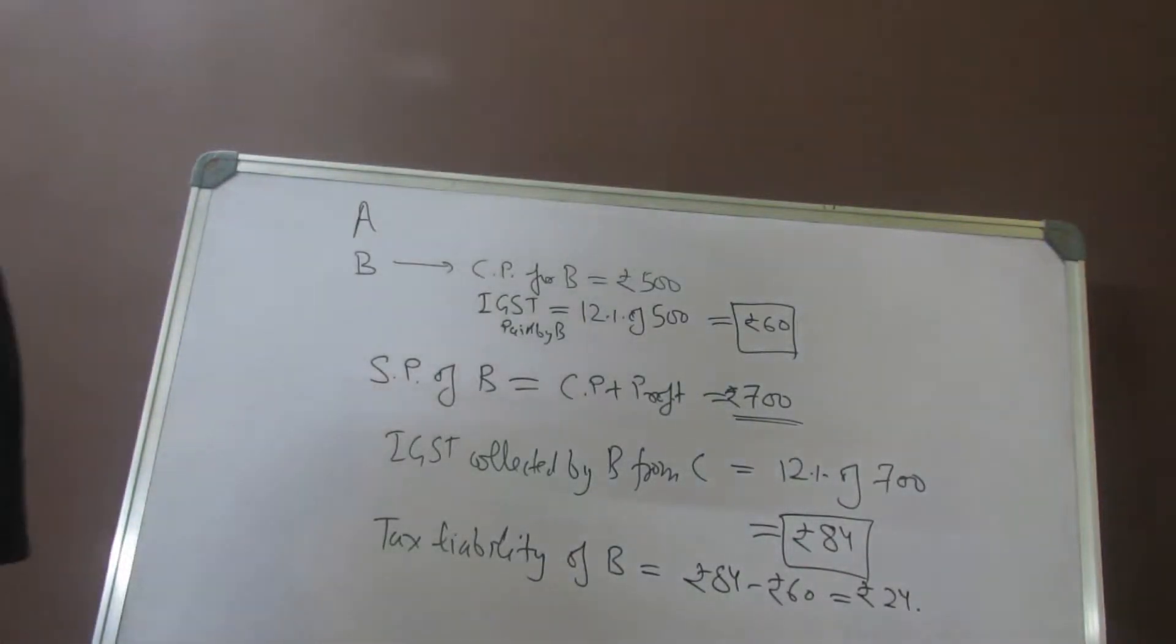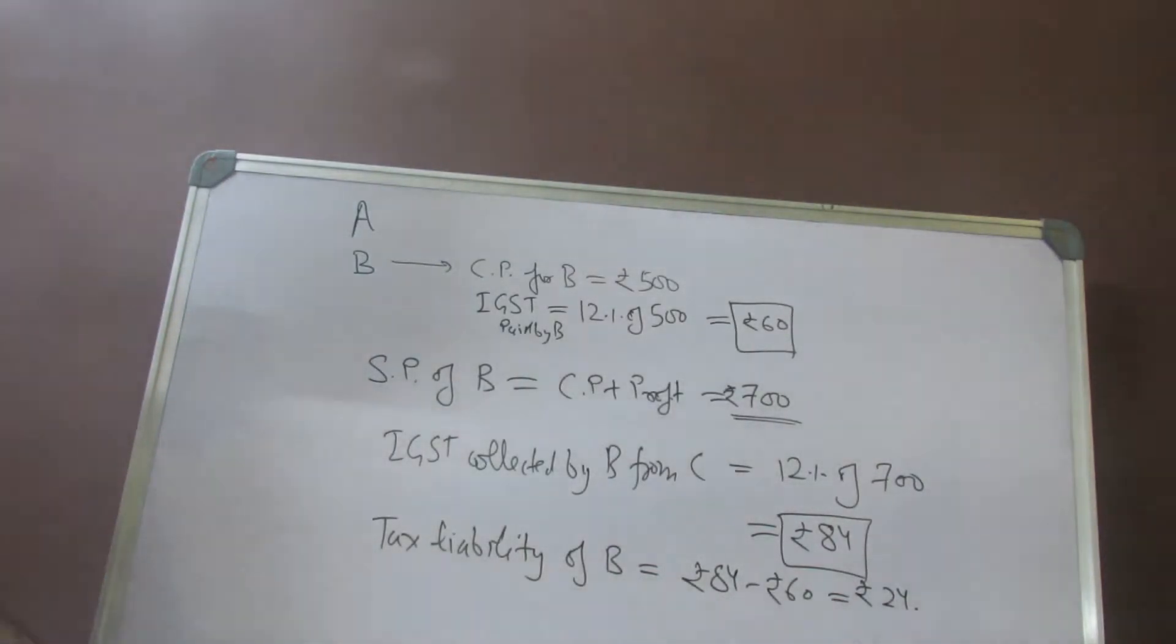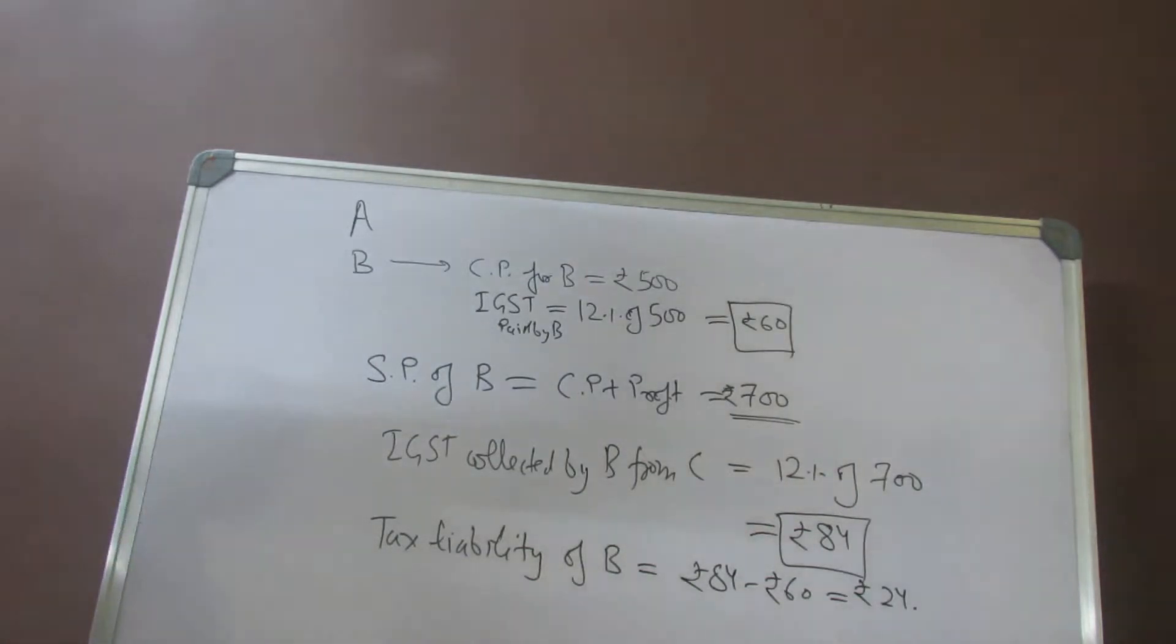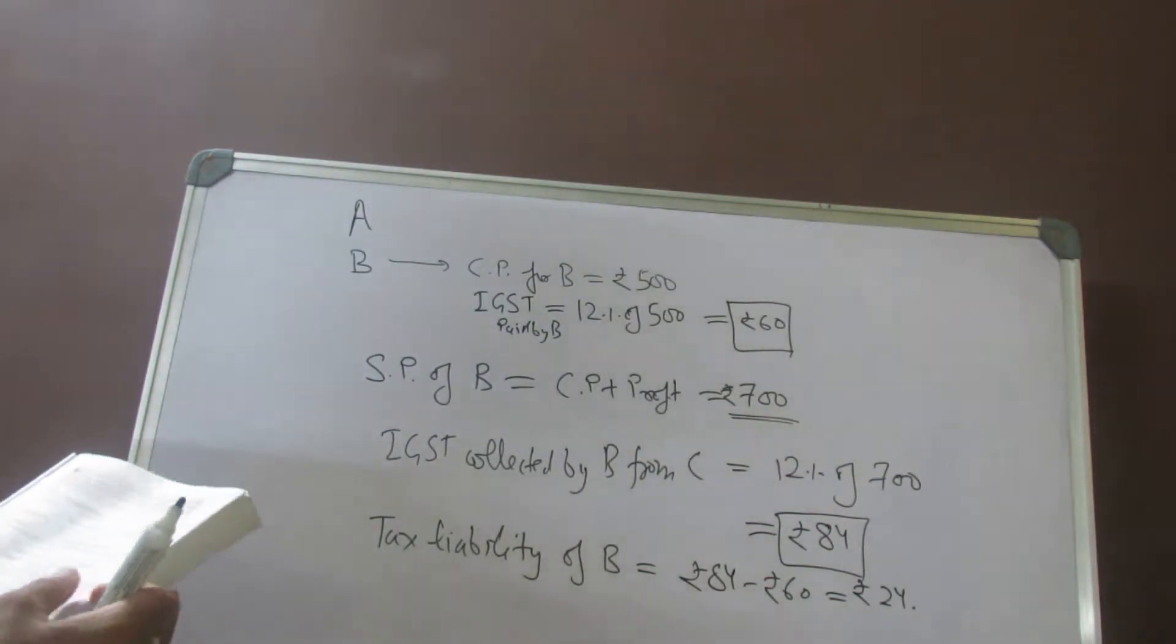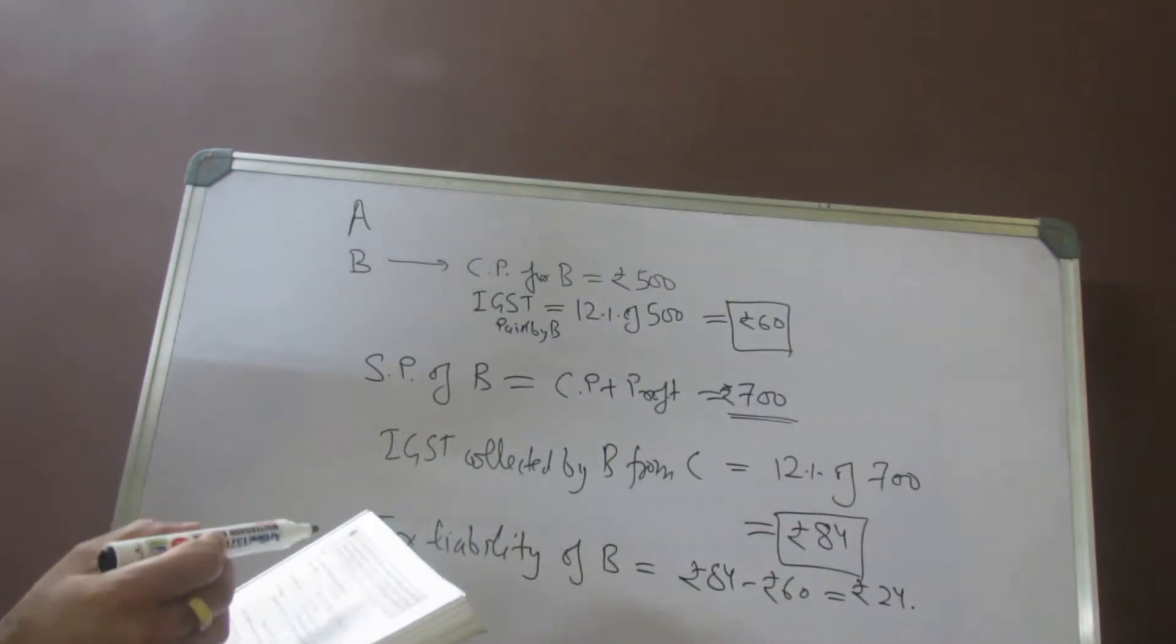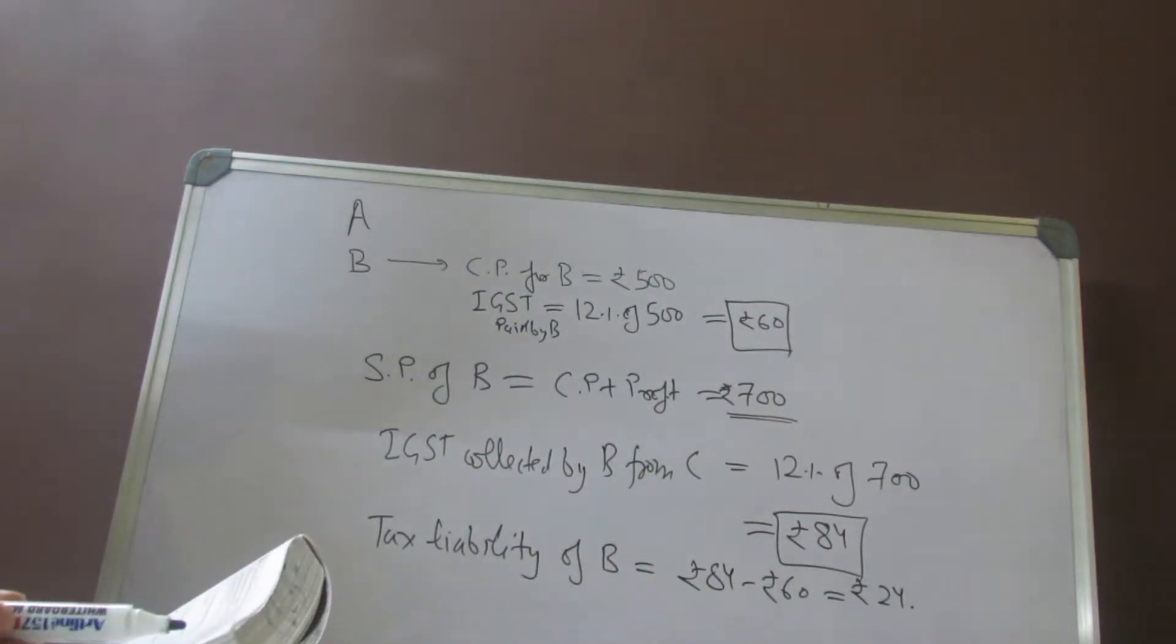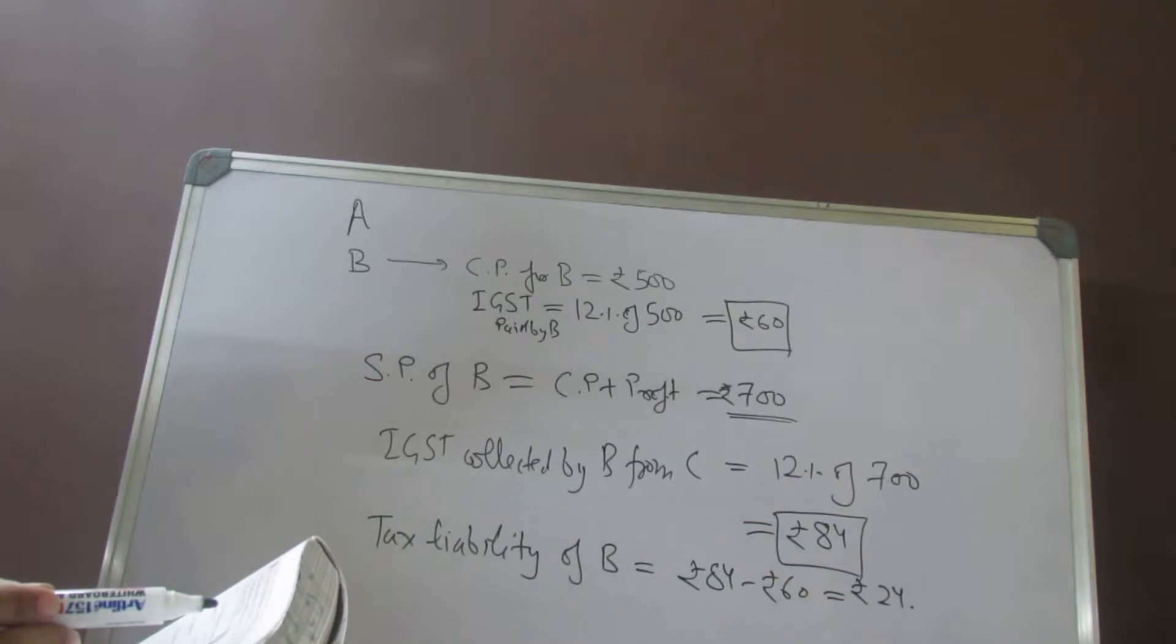Welcome to Himani Coaching Center. This is our third video on GST, in continuation to our question in GST last video GST 2. In that, we were discussing about three dealers A, B, and C, where A sells goods and services to B for 500 rupees, and then B sells the same goods and service to traders C at a profit of 200 rupees.